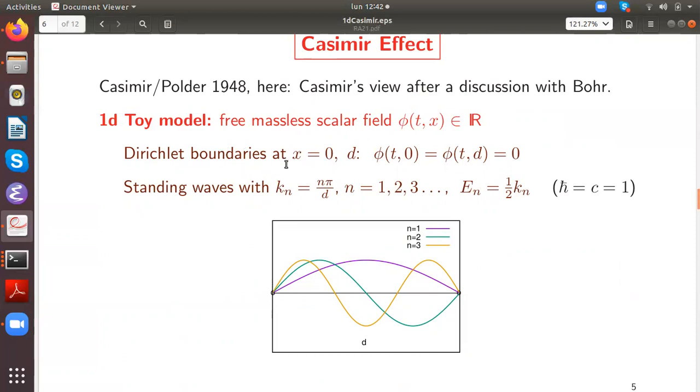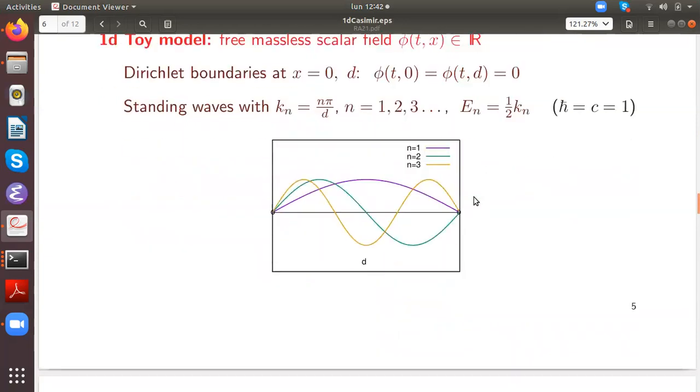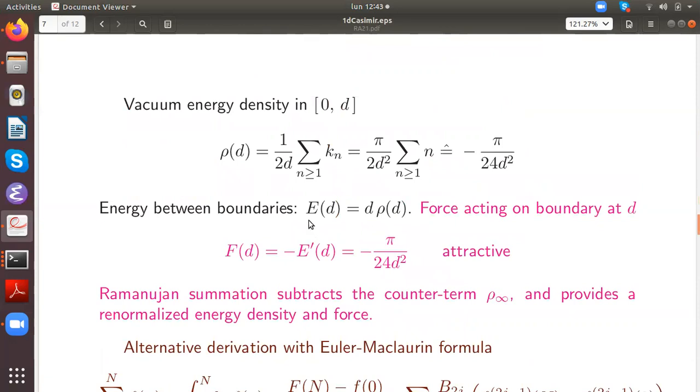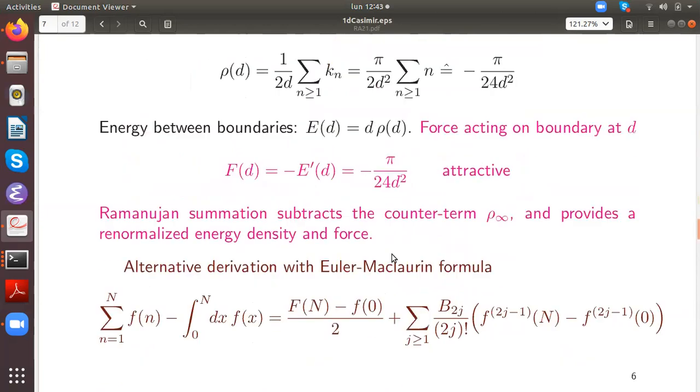Let's first look at the one-dimensional case, the toy model for a massless neutral scalar field, where we impose the boundaries at two points x and d, where the field is forced to be zero. So between these points, we can only have standing waves. These are the wave numbers here, and the corresponding energy is given here. So the vacuum energy density in this interval is simply obtained by summing over these wave numbers, and here we already have the Ramanujan summation.